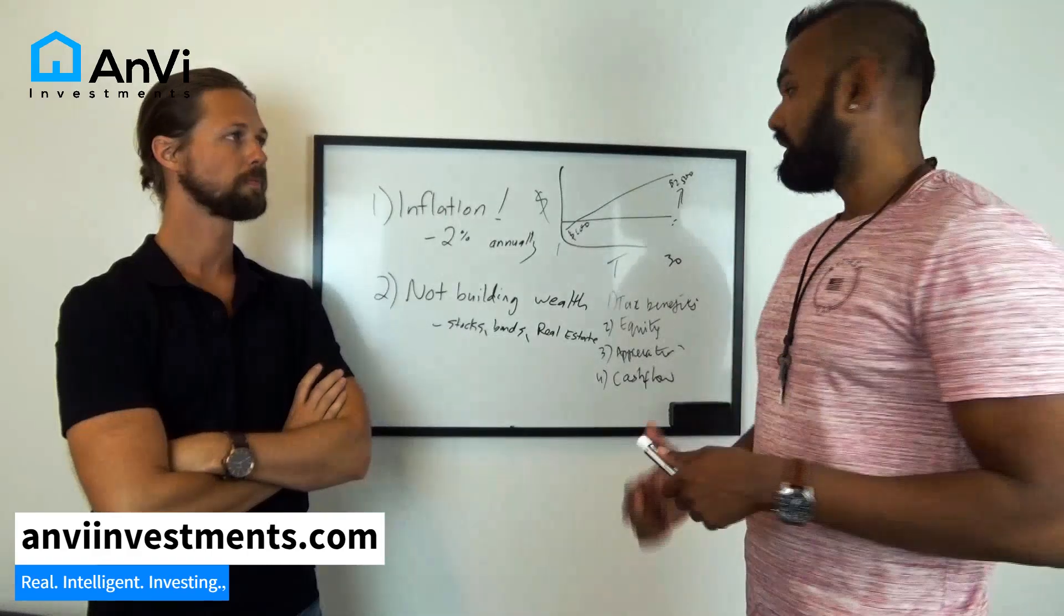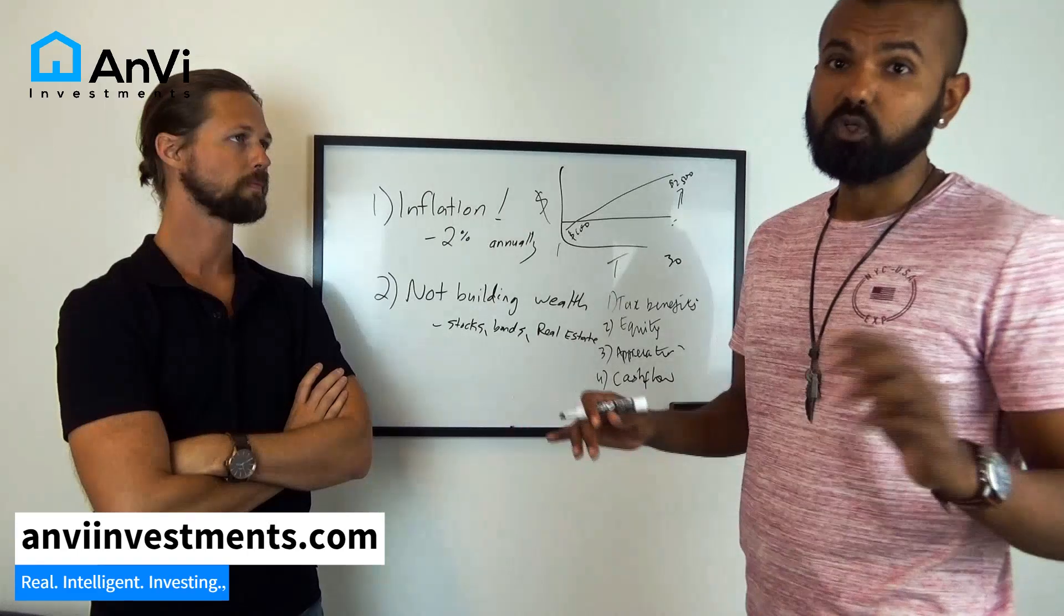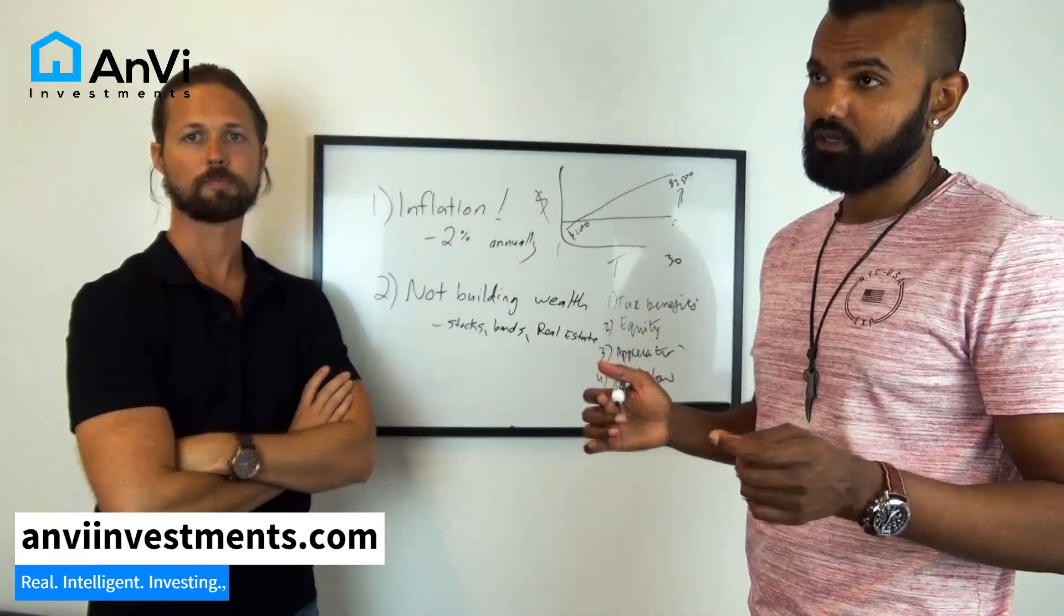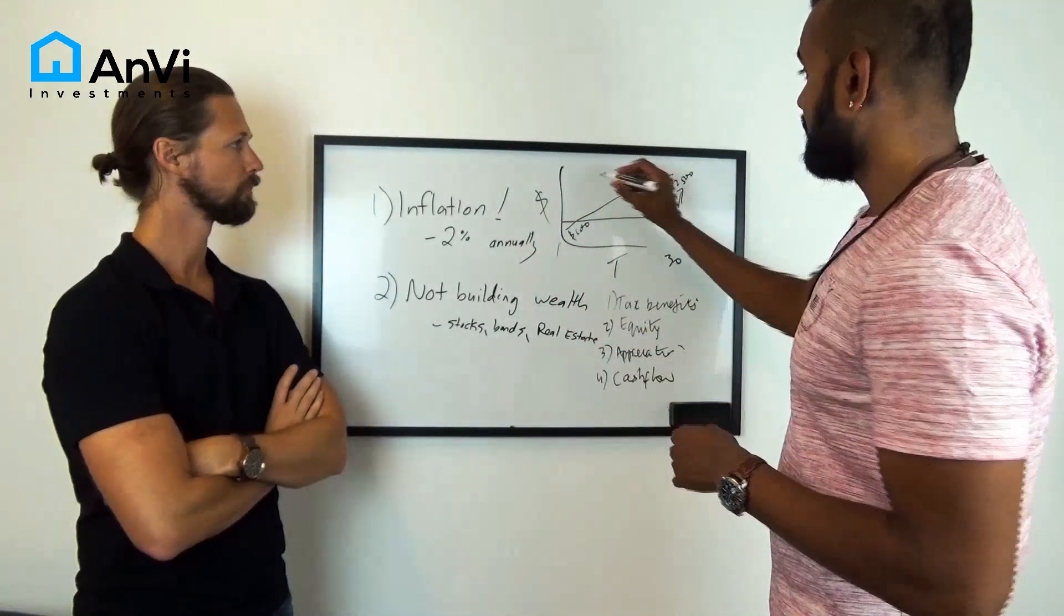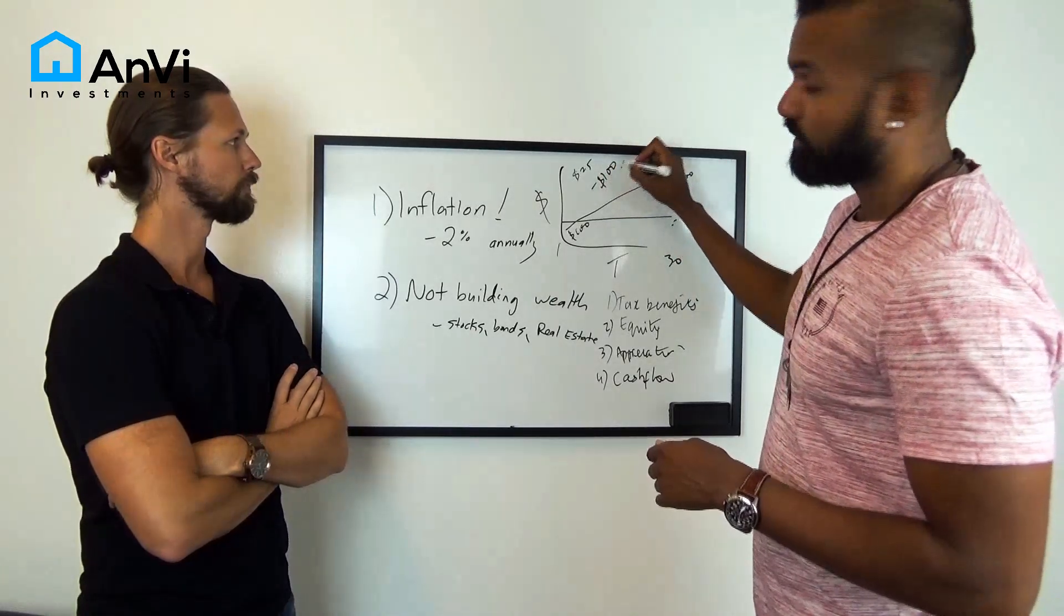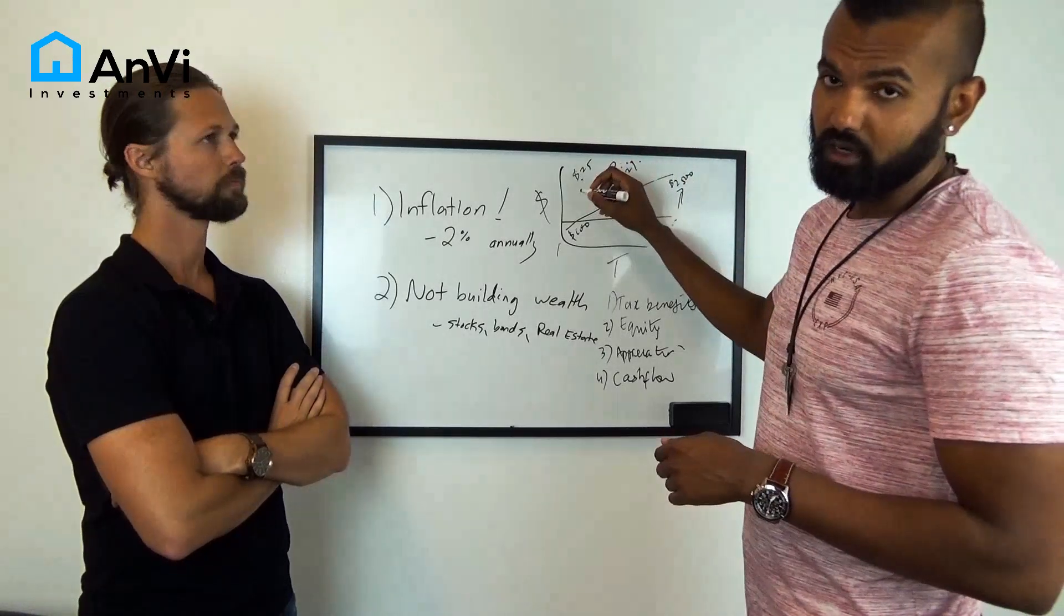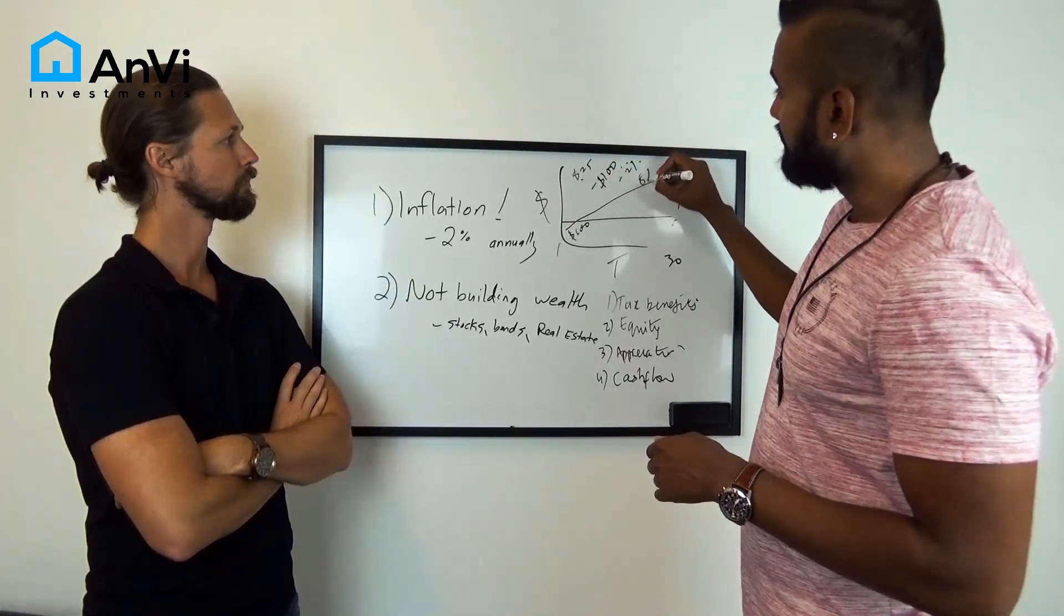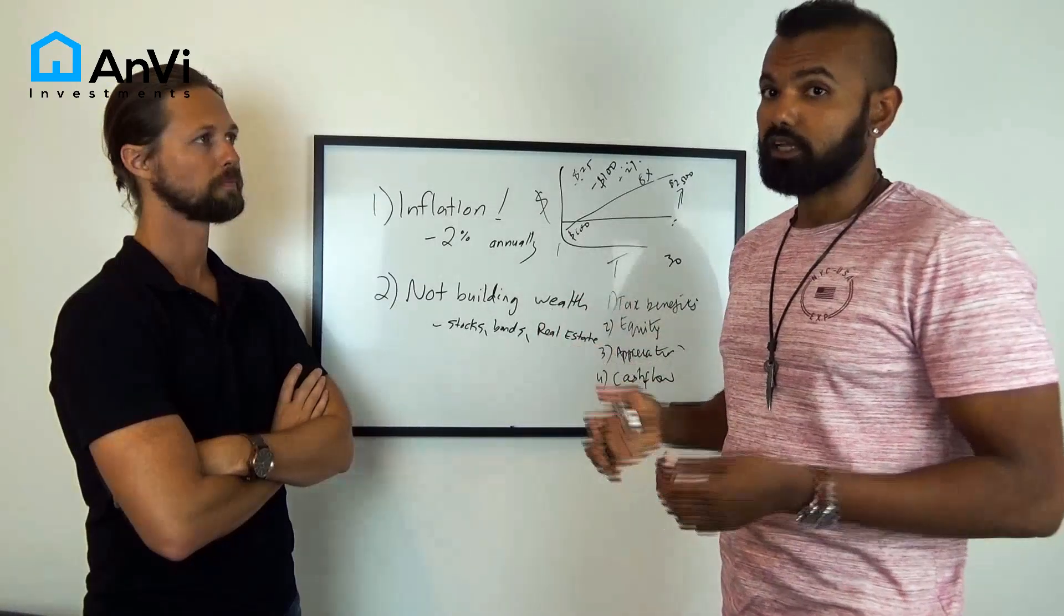One common thing people miss out is appreciation for real estate. Let's just keep it bare minimum 2%, right? Average is like 3% to 5% depending on the market. Let's say it's only 2%. It's going up every year. I told you that $25 buys you $100 of real estate—that's 4x. But this went up by 2%, but you only put $25 in. So what is that? That's like 2 times 4—that's like 8%. You just made 8% just on appreciation because of leverage from the bank.